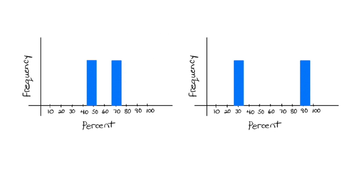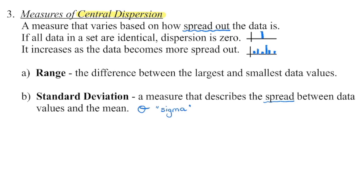Those three measures of central tendency don't tell me the whole story, though. For example, if half a class has a mark of 50% and half has 70%, the mean comes out to 60%. In another class, half got 90% and half got 30% — the mean is also 60%. Same average, but two very different scenarios. We also want to look at how spread out our data is — we call those the measures of dispersion, and there are two: range and standard deviation.